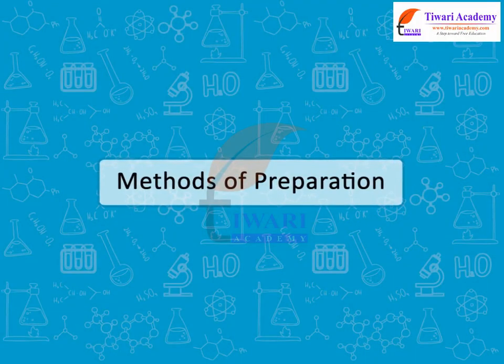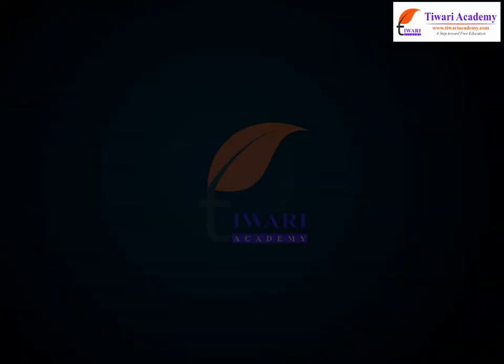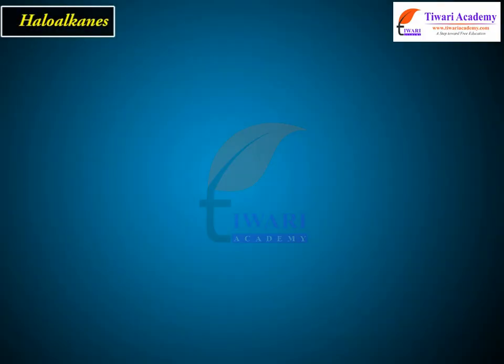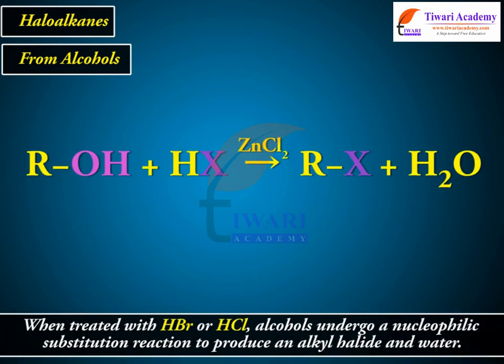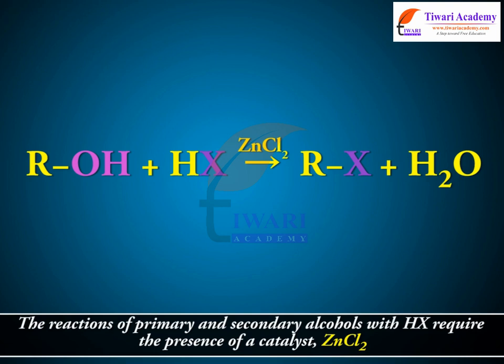Methods of Preparation: Haloalkanes from alcohols. When treated with HBr or HCl, alcohols undergo a nucleophilic substitution reaction to produce an alkyl halide and water. The reactions of primary and secondary alcohols with HX require the presence of a catalyst, ZnCl2.